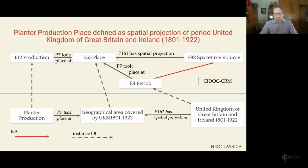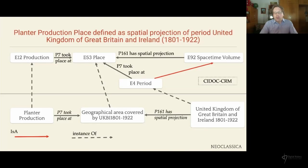CIDOC-CRM allows for a period to fall into another period via the 'consists of' or 'spatiotemporally overlaps with' relationships. Thus, we could, for instance, model Regency as a part of the period United Kingdom of Great Britain and Ireland that lasted from 1801 to 1922. Such modelling may actually be highly desirable because we can avoid that one hegemonic notion of temporality — usually a western one — colonises other notions of temporality. We can hence have different overlapping notions of Biedermeier for different territories.